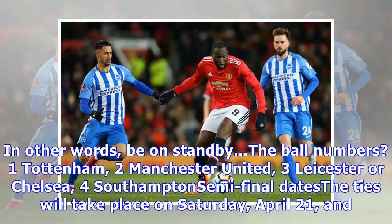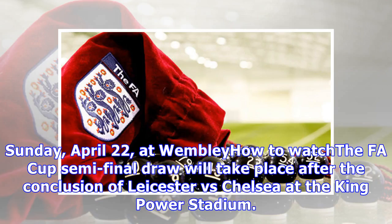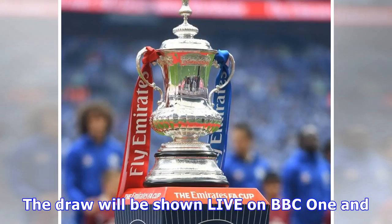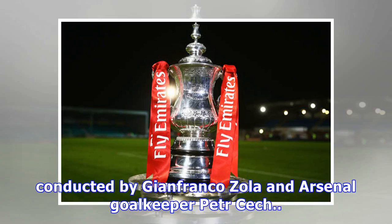The semi-final ties will take place on Saturday April 21 and Sunday April 22 at Wembley. The FA Cup semi-final draw will take place after the conclusion of Leicester vs Chelsea at the King Power Stadium. The draw will be shown live on BBC One and conducted by Gianfranco Zola and Arsenal goalkeeper Petr Cech.